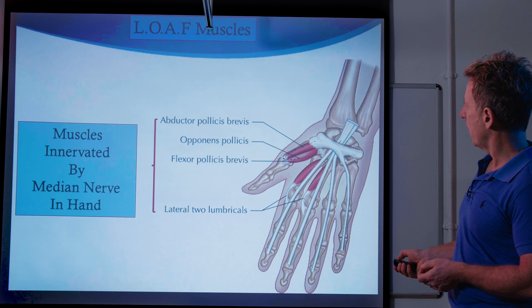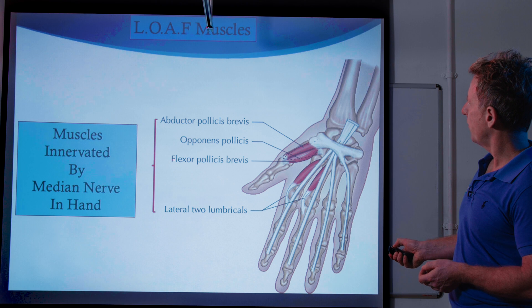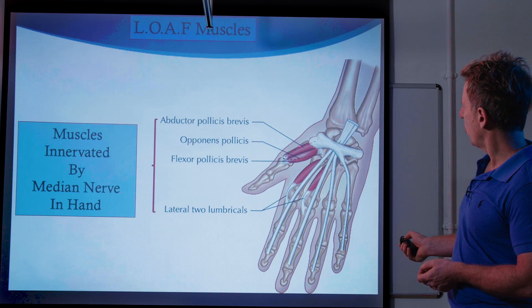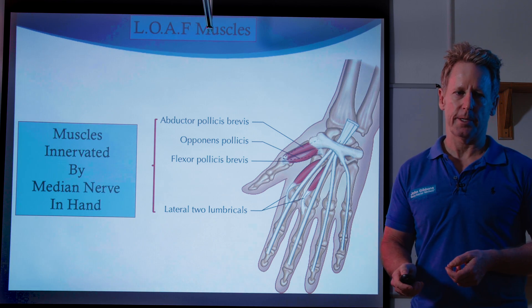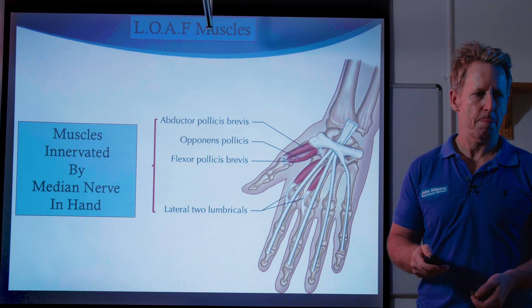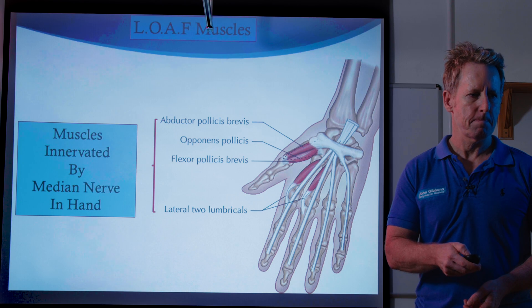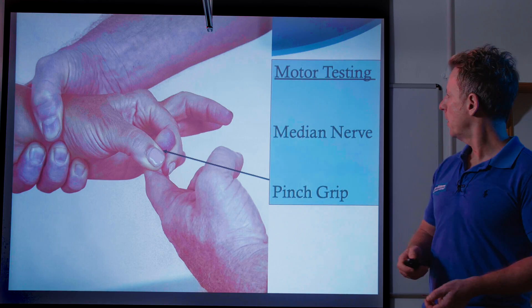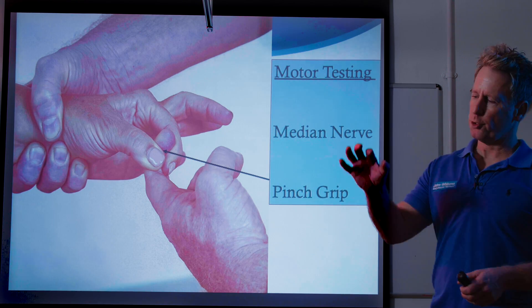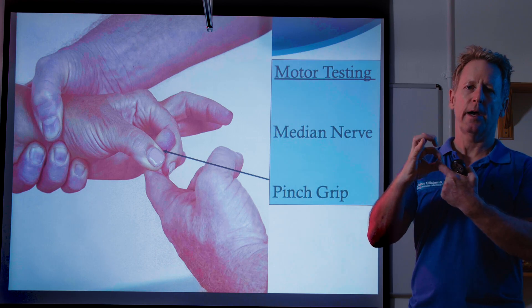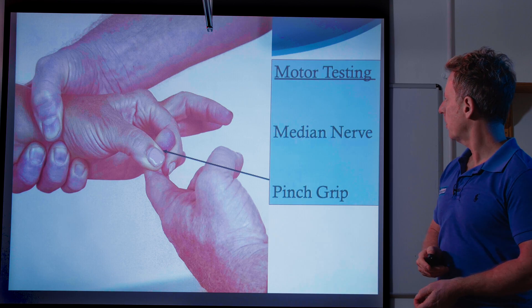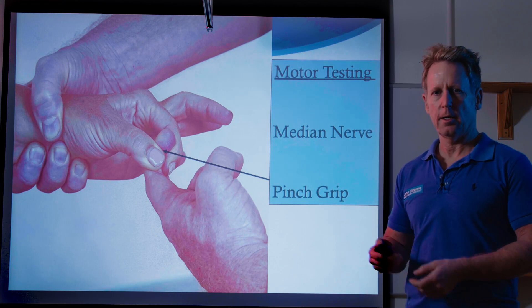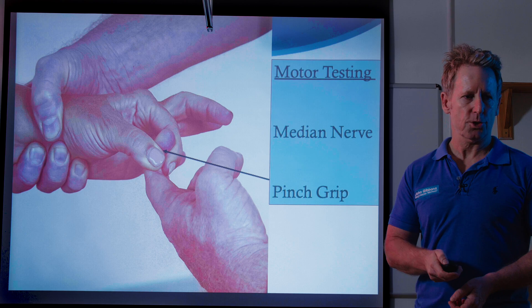The LOAF muscles of the thenar eminence are supplied by the median nerve — L for the lateral two lumbricals, O for opponens pollicis, A for abductor pollicis brevis, and F for flexor pollicis brevis. To test it, you can do a simple pinch grip and resist — that's an easy test for the motor nerve supply of the median nerve.